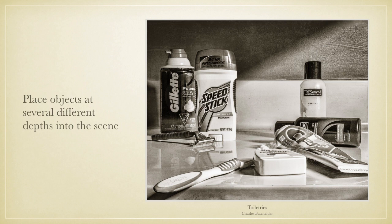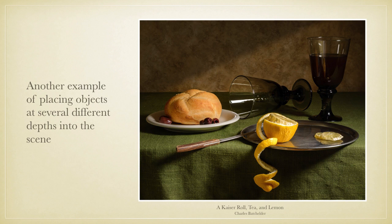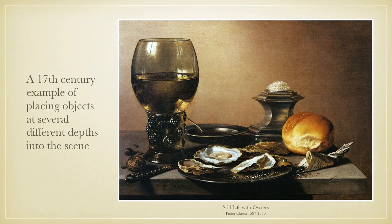Place objects at several different depths into the scene when arranging your still life. It's important to give your traditional still life photograph a three-dimensional feel. Here the objects are placed in the arrangement from the very front of the scene to the back, and the lemon peel and part of the silver plate are even forward of the tablecloth foreground — similar to many 17th-century paintings — thereby creating an even stronger three-dimensional feel and a sense of instability that metaphorically represents the precariousness of all worldly things. In this 17th-century example, the objects range from the salt cellar at the back of the table to the knife and silver platter that are partly off the front edge of the table, with several objects in between these two extremes.